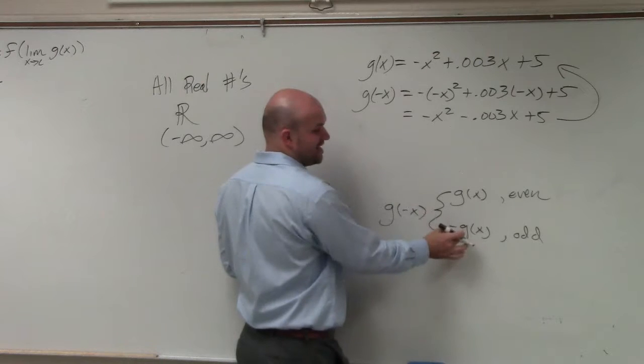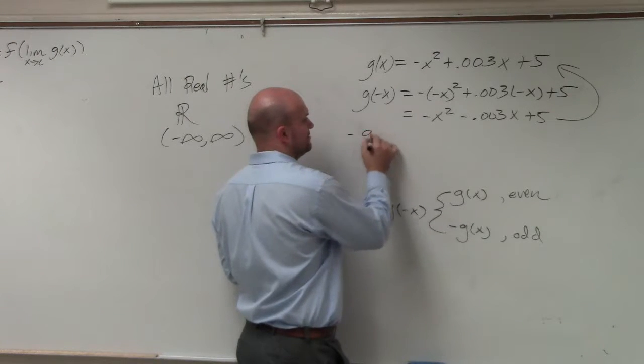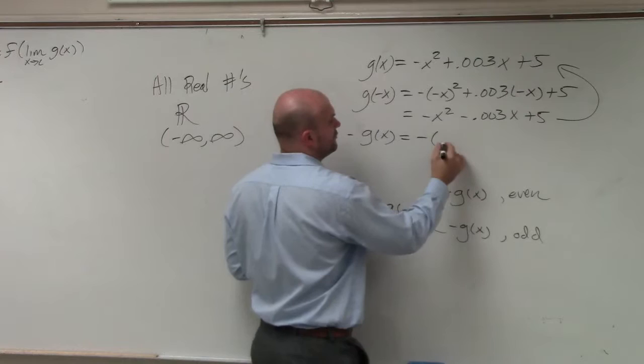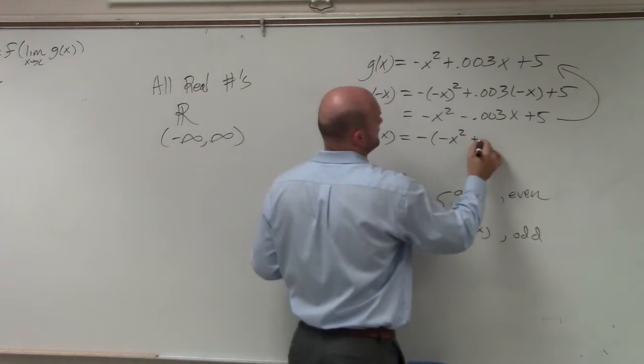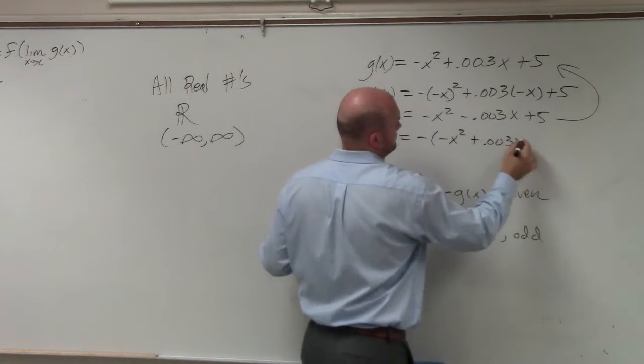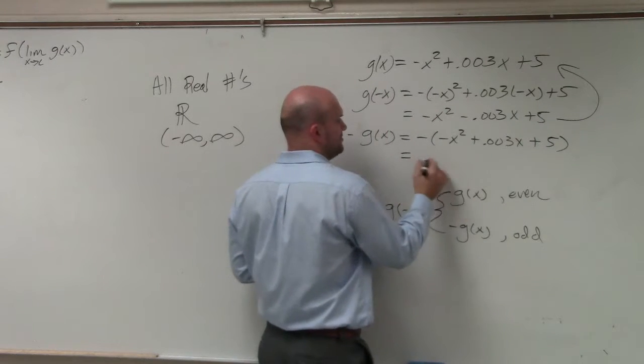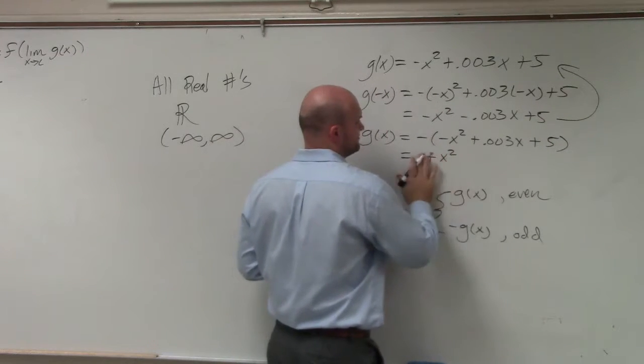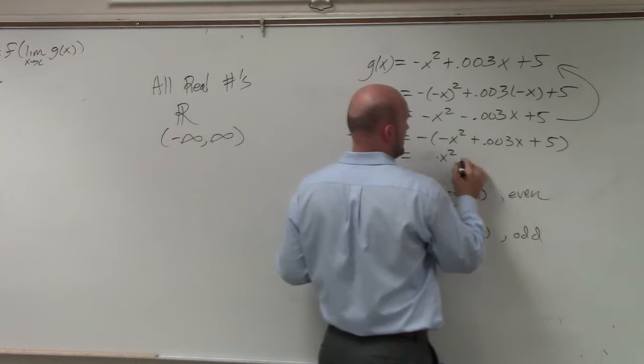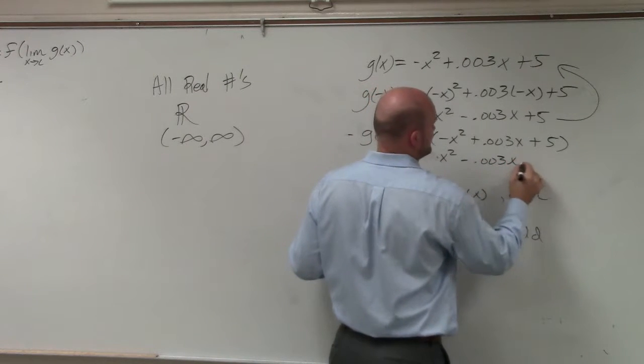So then we need to check opposite of negative g of x. And all you do for that is just multiply the whole function by a negative. And when you distribute, you get plus x squared minus 0.003x minus 5.